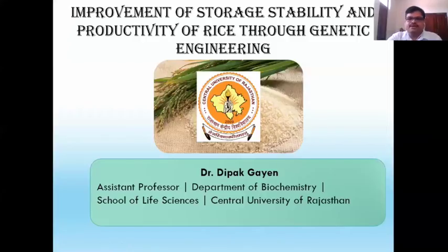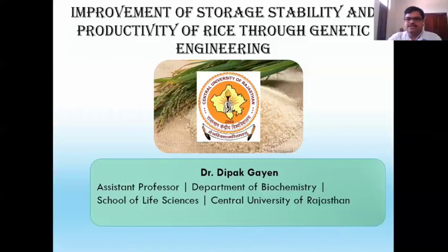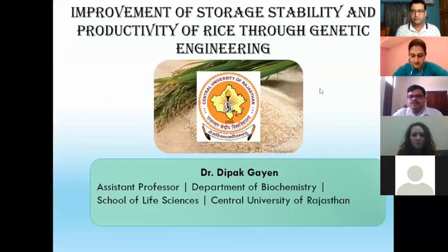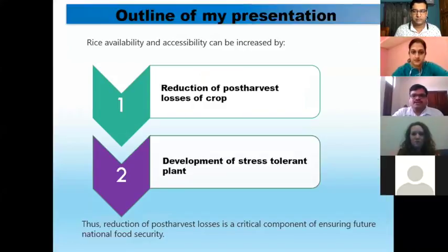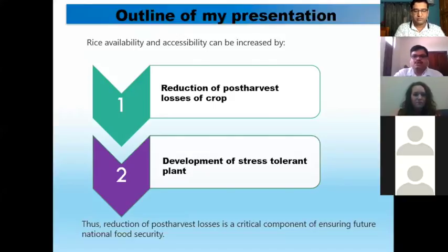Today I'm going to present my work on the improvement of storage stability and productivity of rice through genetic engineering. Why is it important? Storage stability and productivity are very important to improve nutrition quality as well as the yield. The outline of my presentation is divided into two parts: the first part is the reduction of post-harvest loss of crops, and the second is the development of the golden plant. Both are very important to ensure food productivity and food security in the near future.